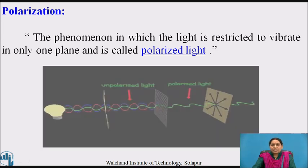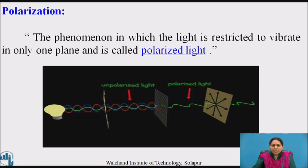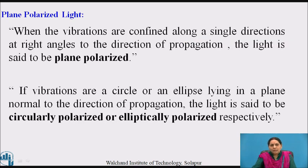The phenomenon in which light is restricted to vibrate in only one plane is called polarized light. Polarized light is not produced naturally; it is obtained by converting natural light into polarized light by using optical elements. Polarized light consists of waves with planes of vibration in a single plane normal to the ray direction. It may be regarded as the resultant of two mutually perpendicular coherent waves having a zero phase difference. The polarization of light describes the shape and locus of waves in the plane perpendicular to the direction of propagation at a given instant of time and space.